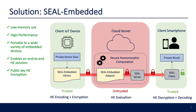SEAL Embedded is an HE library for embedded IoT devices. Devices use SEAL Embedded to encrypt data on the device and send it to the cloud, where it is read by the SEAL Embedded adapter. The adapter collects data from the device library into an object interpretable by the Microsoft SEAL library, which implements all components of HE evaluation. A separate instance of SEAL on the user device allows decryption of results. By virtue of this adapter, we achieve an end-to-end HE flow, and overall SEAL Embedded satisfies all the requirements discussed.